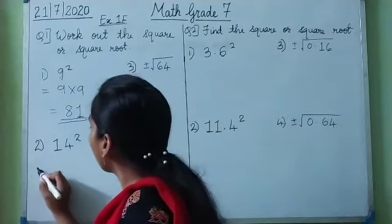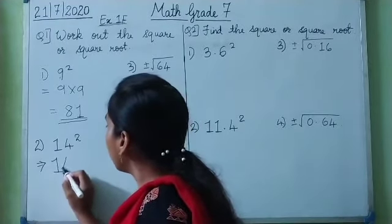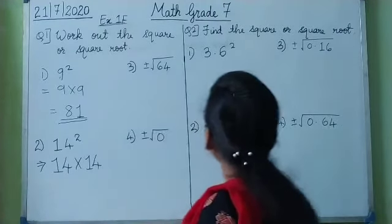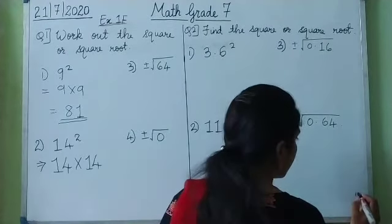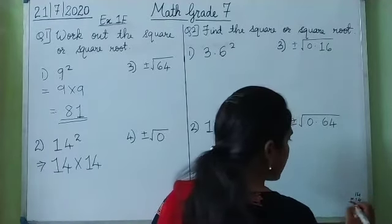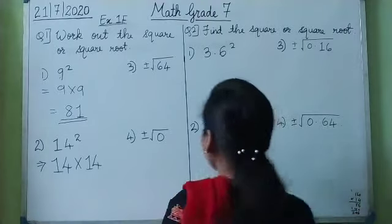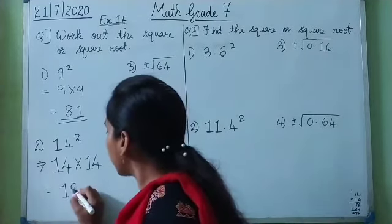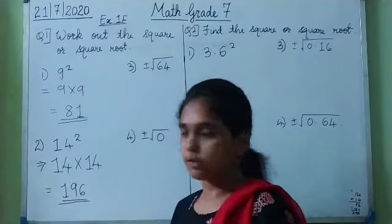Now the next: the square of 14. So 14 squared means 14 multiplied by 14. Let us calculate: 14 into 14 is 196. So 196 is the square of 14.